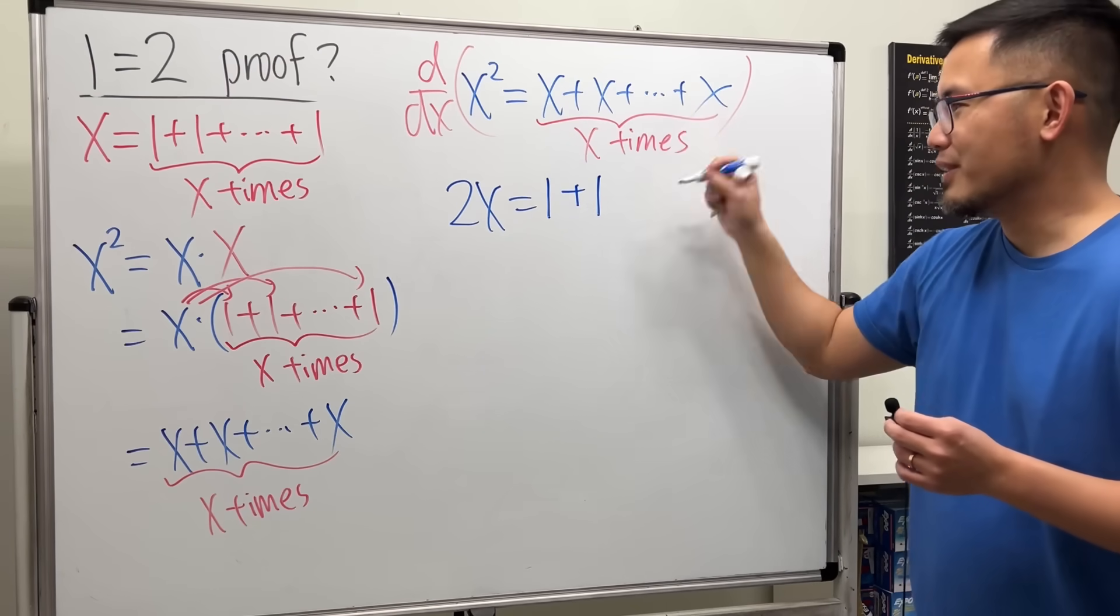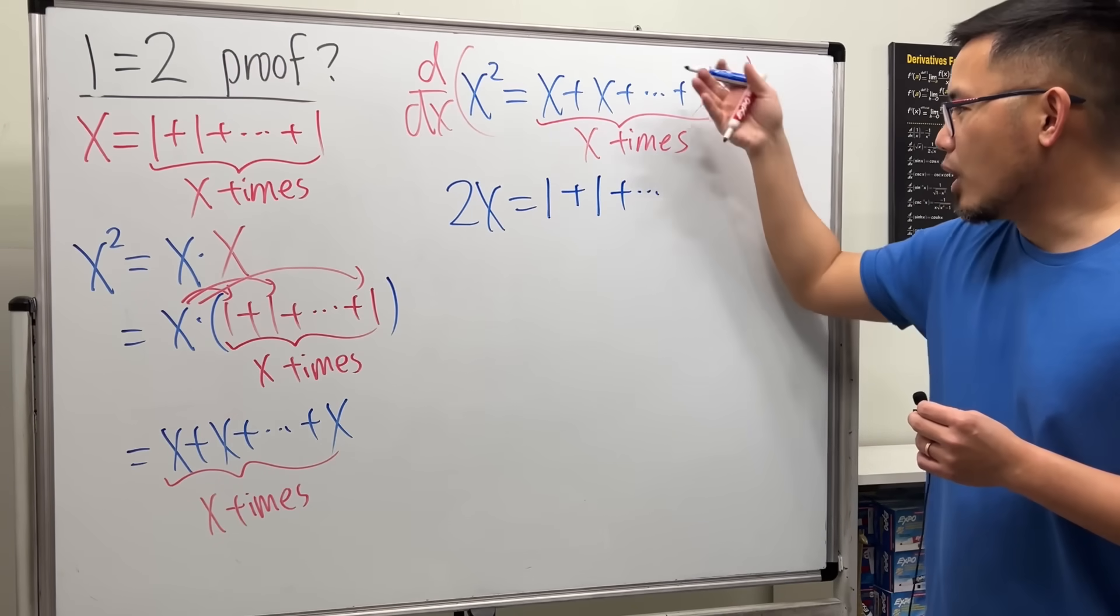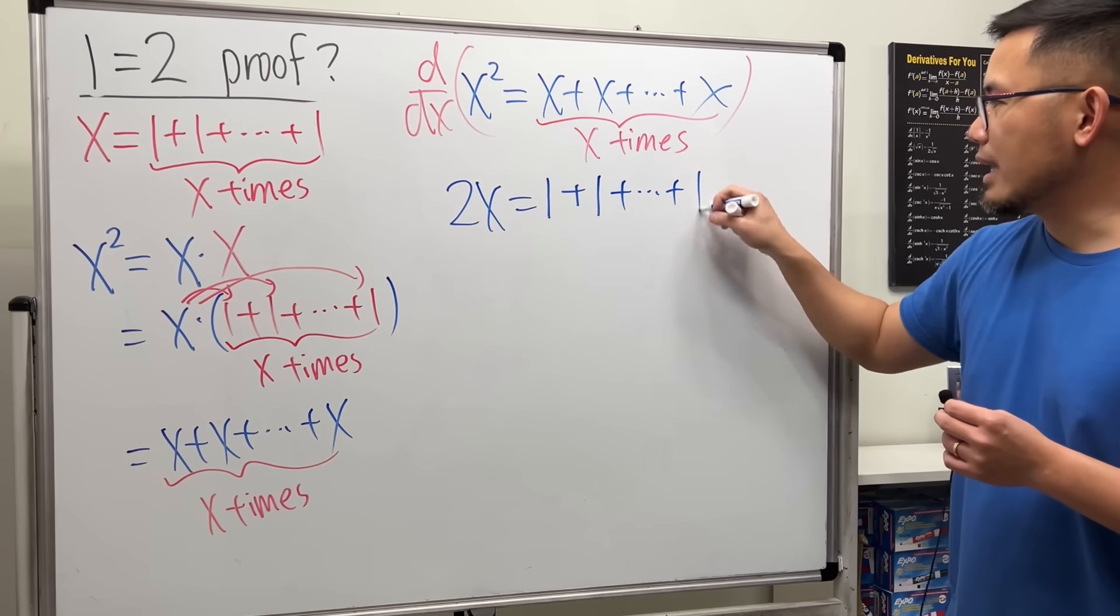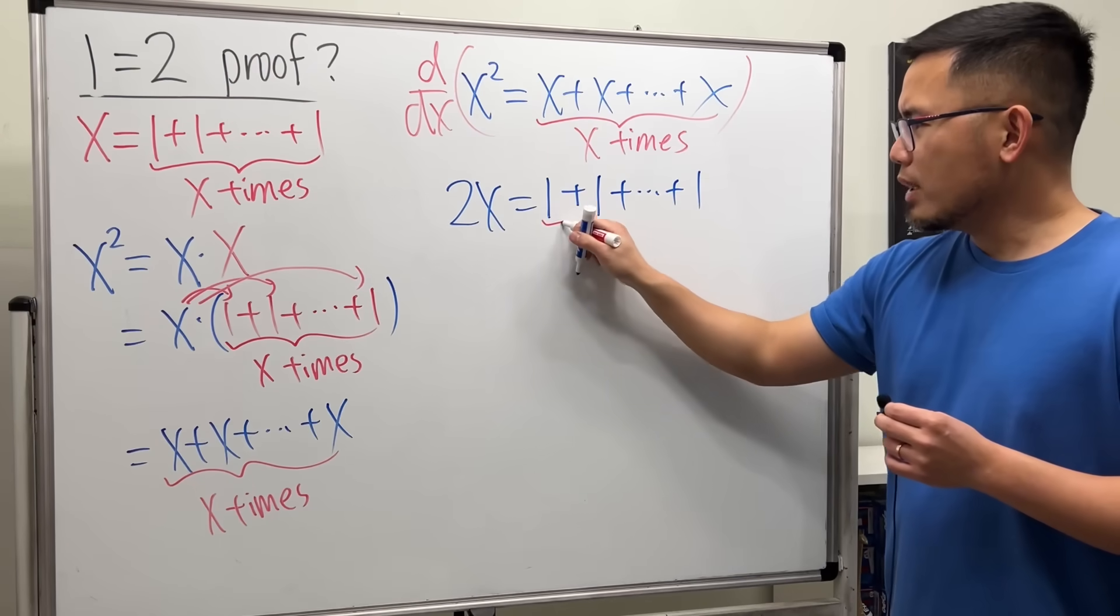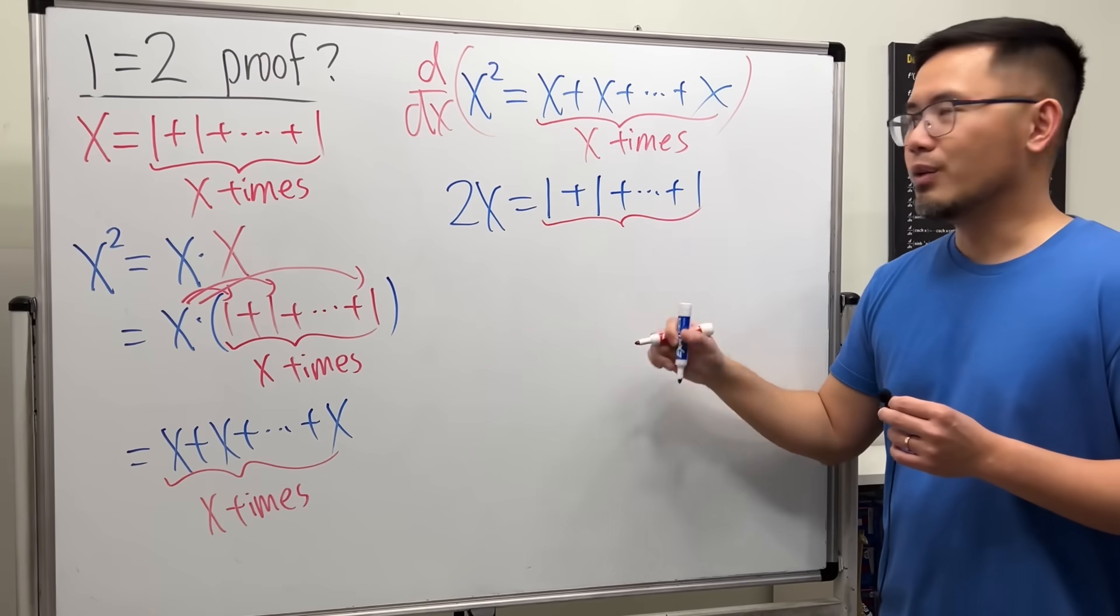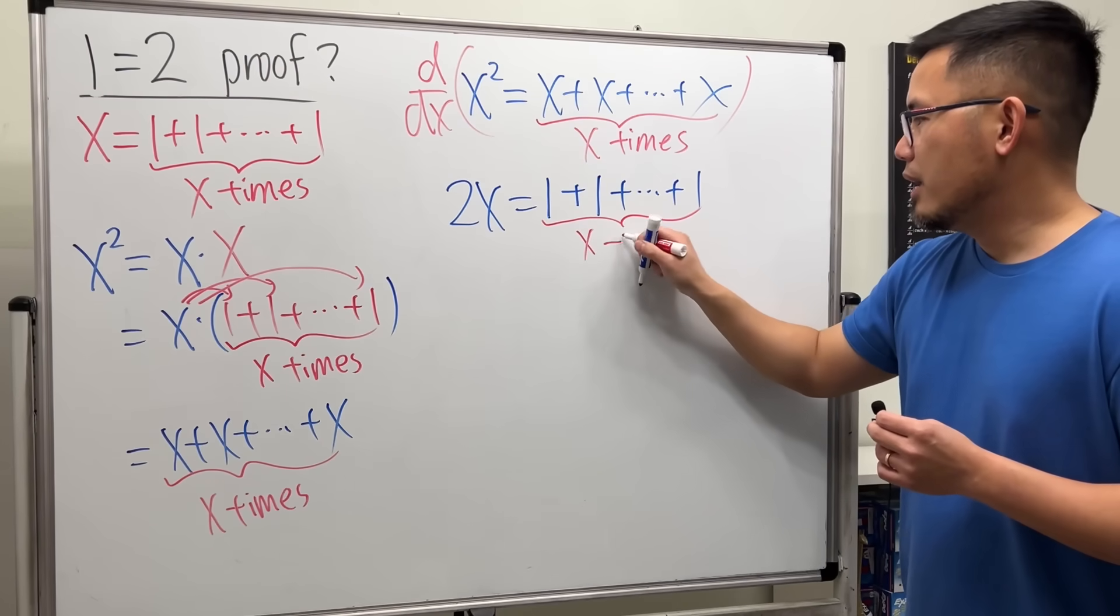And then we add the derivative of this is 1, same thing for the rest, so plus dot dot dot all ones, and then up to the last one will also be 1. But how many ones do we have here? Well, again it must be X of them.